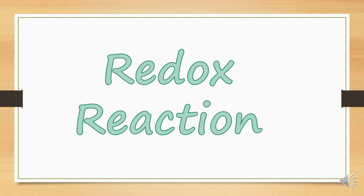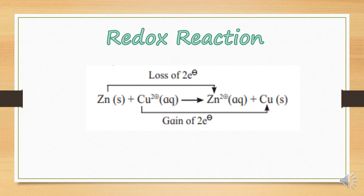Consider this reaction — it is a redox reaction where zinc metal is losing electrons and turning into zinc ions, and copper ions are accepting electrons to turn into copper metal. If you recall from standard 10, you have learnt displacement reaction, where the more reactive metal displaces the less reactive metal from its salt solution. In class 10, you took copper sulphate solution, put a zinc rod into it, and a redox reaction — also called a displacement reaction — started taking place.